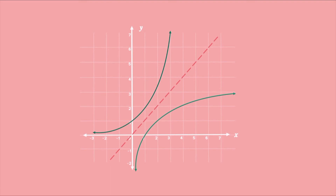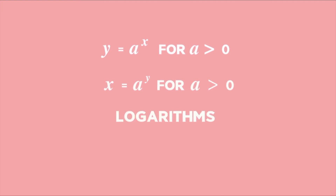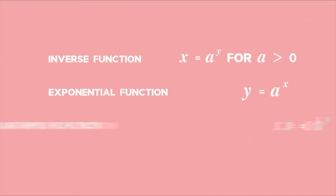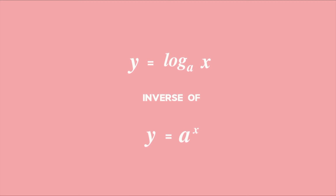What is the formula for the inverse graph? Consider y equals a to the power of x. To find its inverse, swap x and y: x equals a to the power of y. To make y the subject, since y is the exponent, we need logarithms. By converting from exponential to log form, we get y equals log base a of x. So the inverse of the exponential function y equals a to the x is the logarithmic function y equals log base a of x.